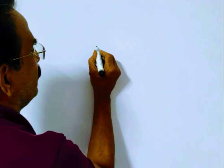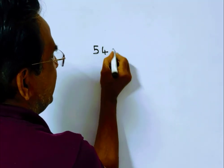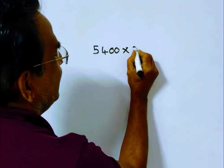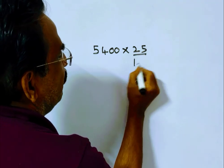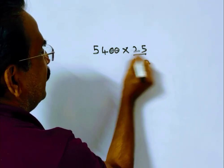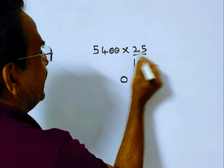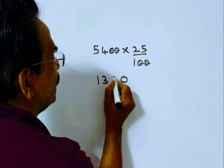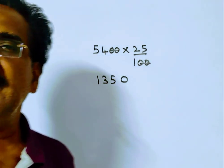in the same expenditure of rupees 5400. Here the price is reduced by 25 percent. What is 25 percent of 5400? 25 percent of 5400 equals 1350 rupees.